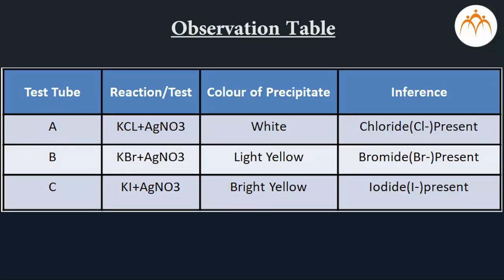This is the observation table. We conclude the following: We have identified that all three solutions contain halide or compound formed by halogens, which is the 17th group. There is precipitation. Precipitates are of different colors.